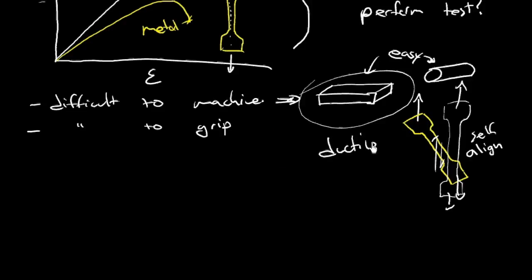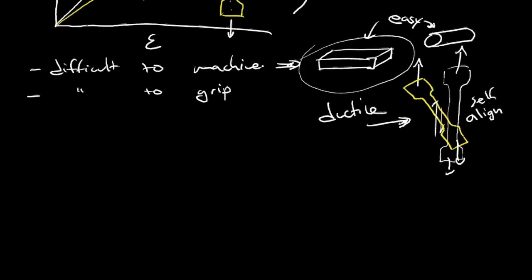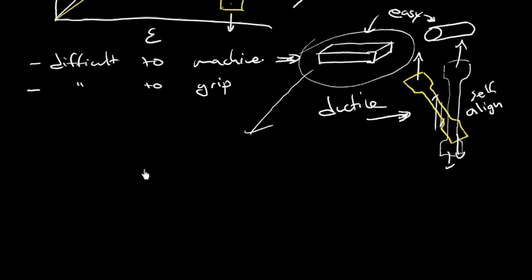But of course, ceramic is not ductile. So if you have your sample even off by a tiny, tiny angle, you don't have a valid tensile test and you get a significant shear component. So a much easier way to do it is take this easy shape like this.